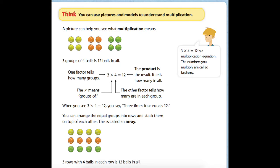One factor tells us how many groups we have, so we have three groups. The x means groups of, so we have three groups of, and then the other factor tells how many are in each group. Then we have our equal sign, and the product is the result - it tells how many in all. When we multiply two numbers, each number is called a factor, and the answer of a multiplication problem is called the product.